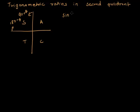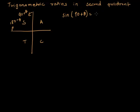So sine of 90 plus theta — because in the second quadrant sine is positive, sine of 90 plus theta becomes still positive, and because of this 90, it becomes cos theta.